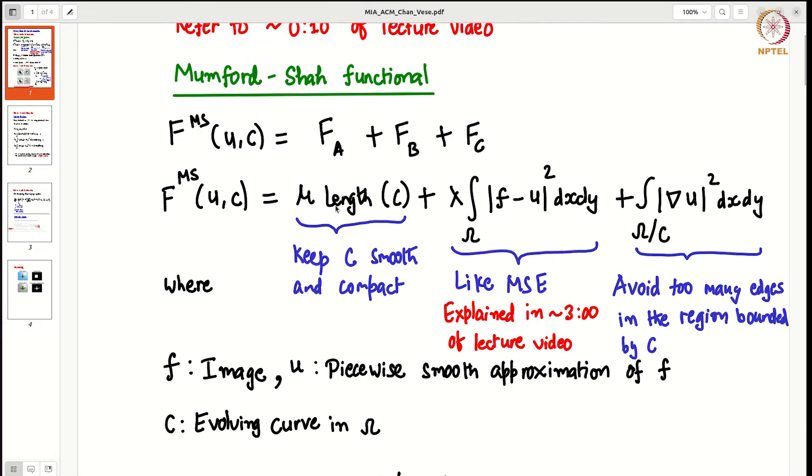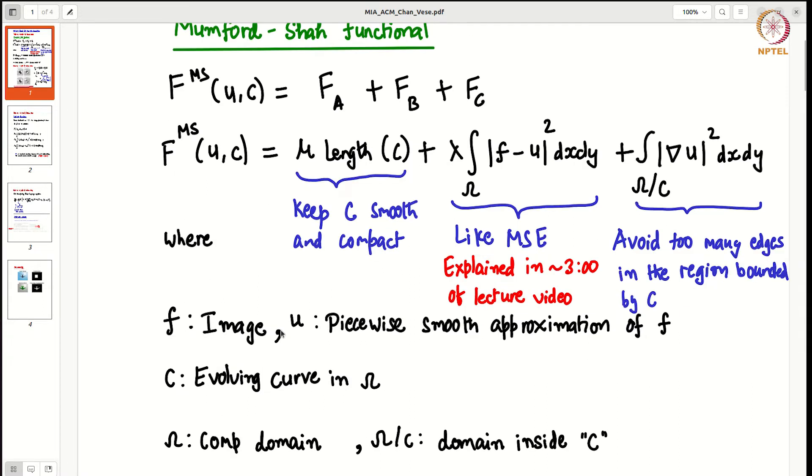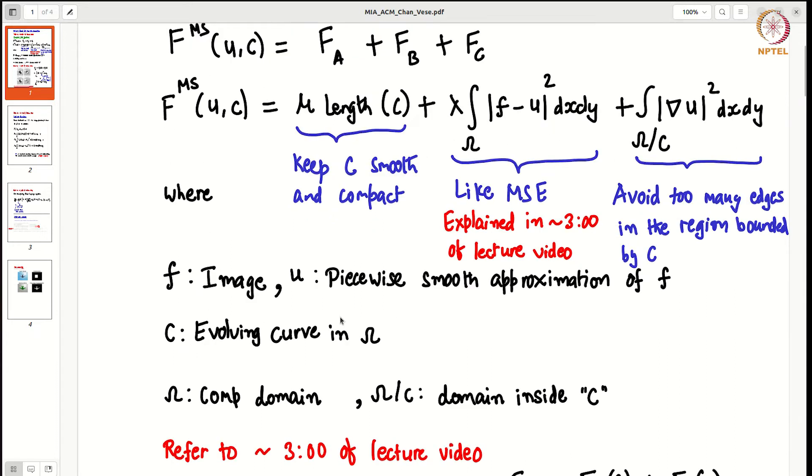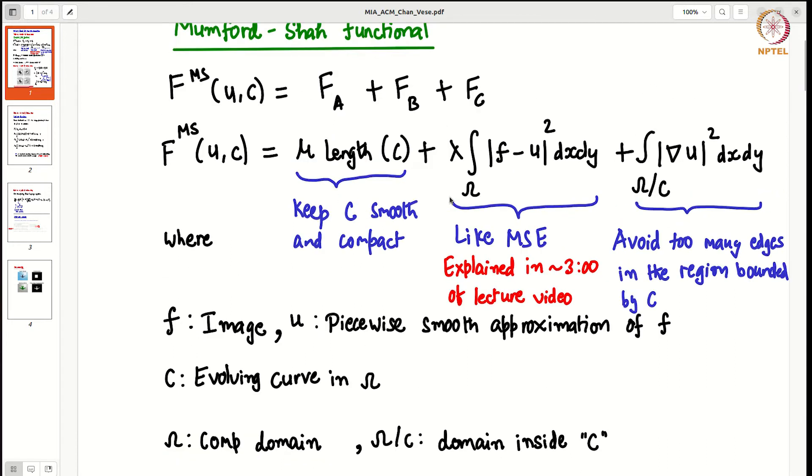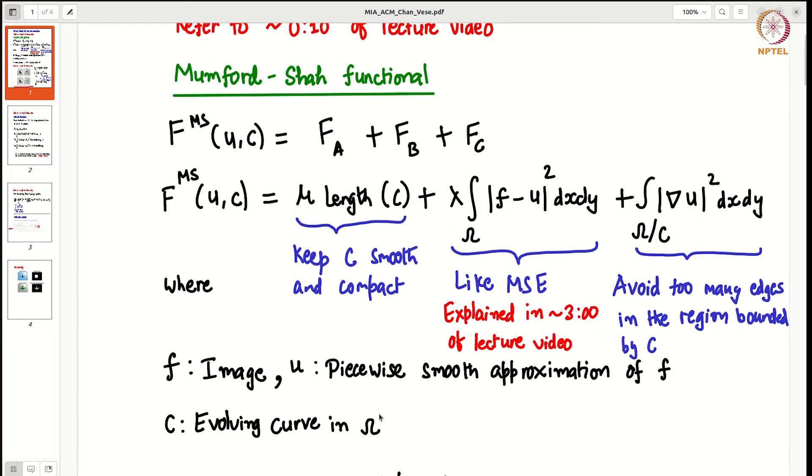Some notations: C is the evolving curve that we are using all the time. Here small f represents image, u represents its piecewise smooth approximation. Omega represents the complete computational domain, and omega by C represents the domain within C. With this notation you can understand the functional here.